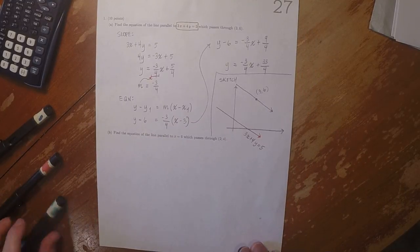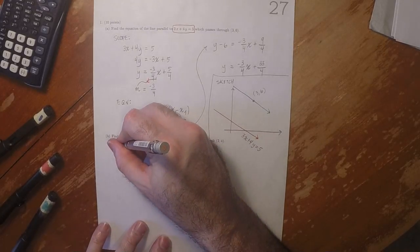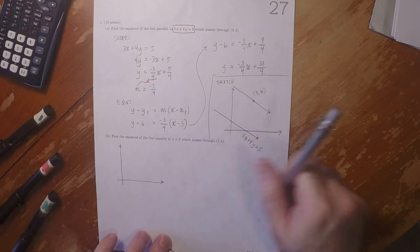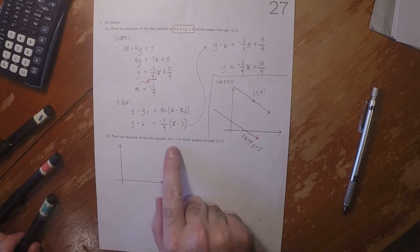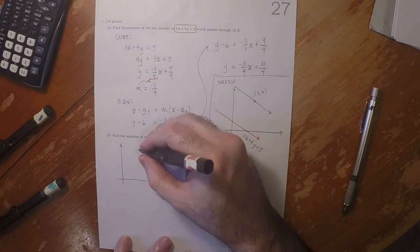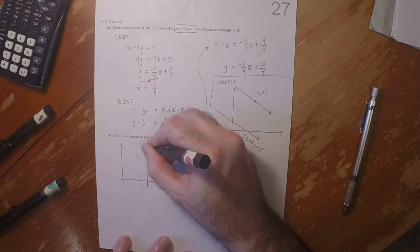For this one, the sketch is really helpful because now the line that we're given is x equal to 6. So that's a line right here. It's a vertical line.